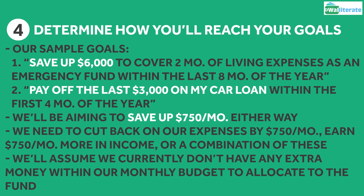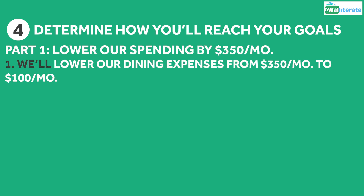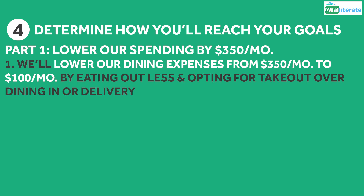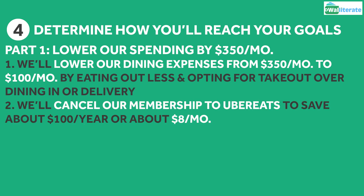Let's assume we currently don't have any extra money within our monthly budget to allocate to the fund, so let's first make some cuts. We'll lower our dining expenses from $350 to $100 a month by eating out less and opting for takeout over dining in or delivery. We'll cancel our membership to Uber Eats, which saves about $100 a year, or a little over $8 a month.